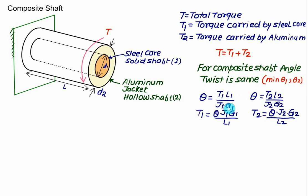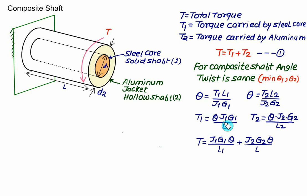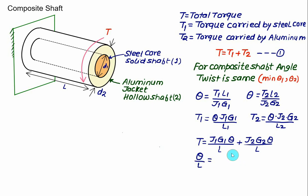Substituting t1 and t2 back into equation one: t = (j1·g1·theta)/l + (j2·g2·theta)/l. Since the lengths are the same, theta/l is common, so we get theta/l = t / (j1·g1 + j2·g2). This is the strategy for solving composite shaft problems: one equation from torque equilibrium (t1 + t2 = t) and one from the compatibility condition that theta is the same for both shafts.